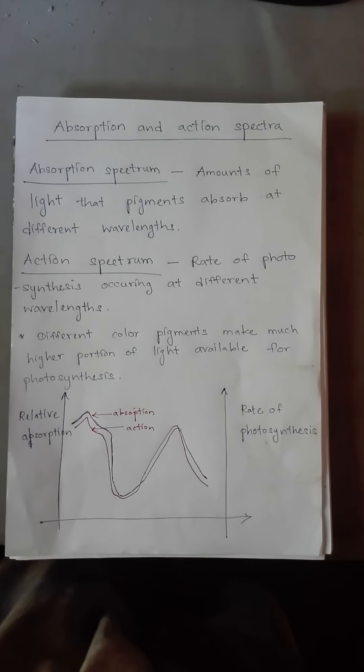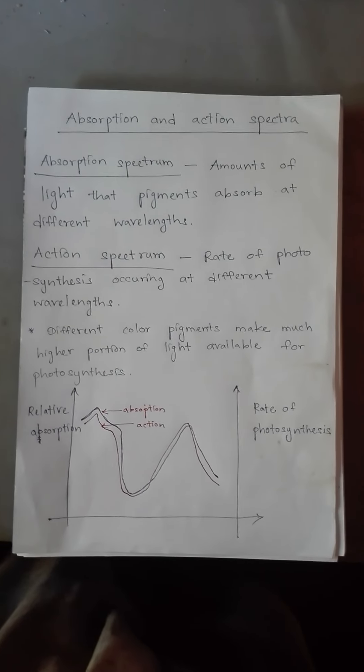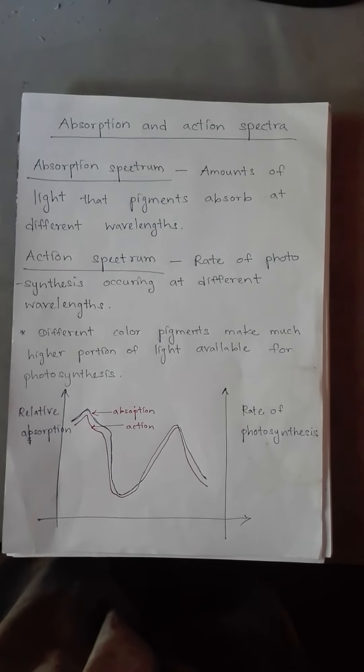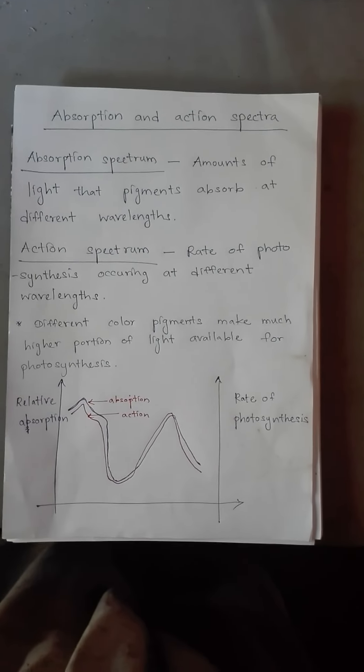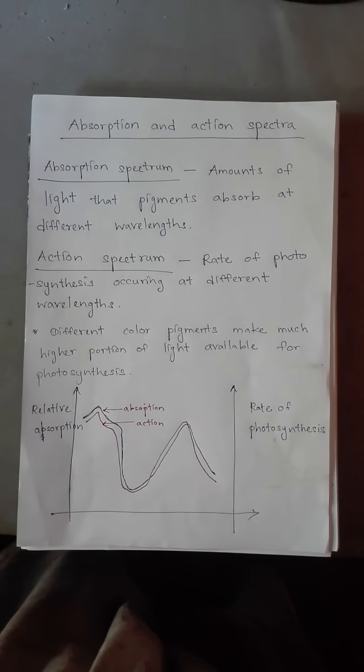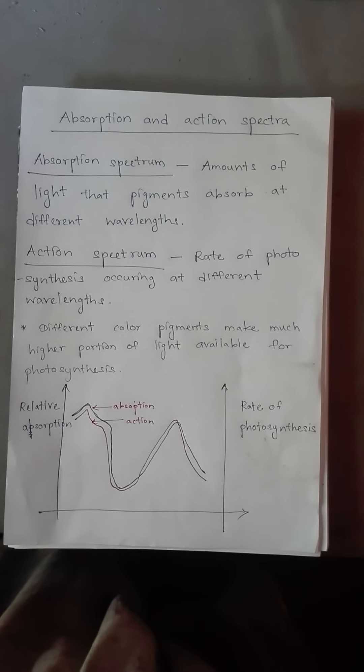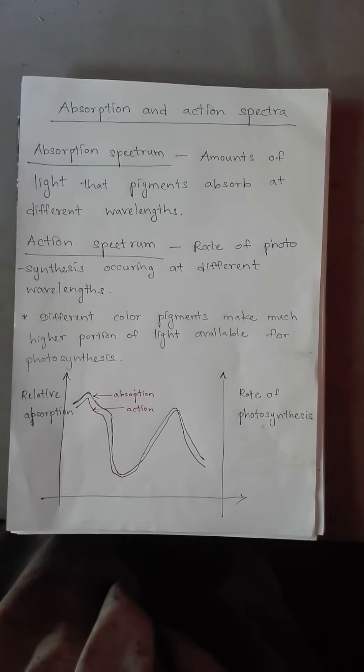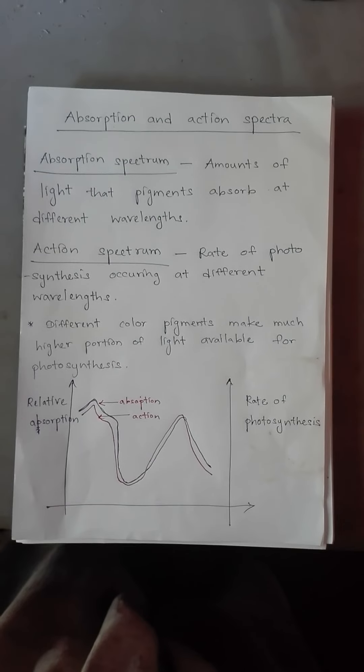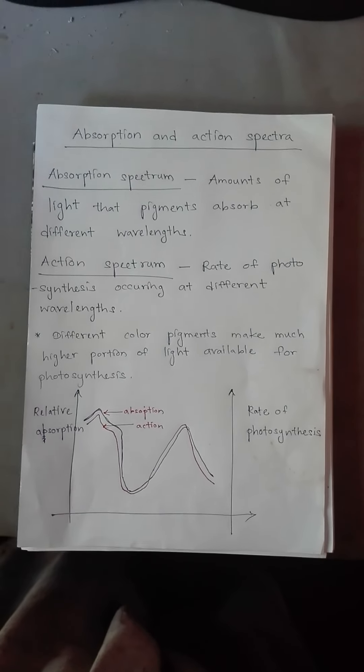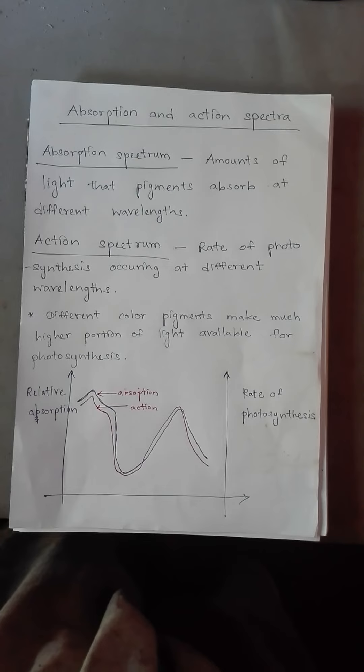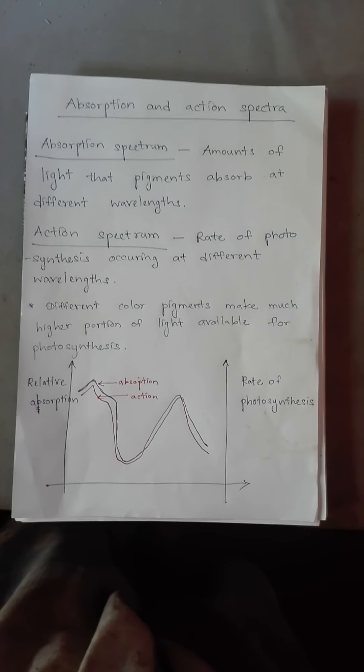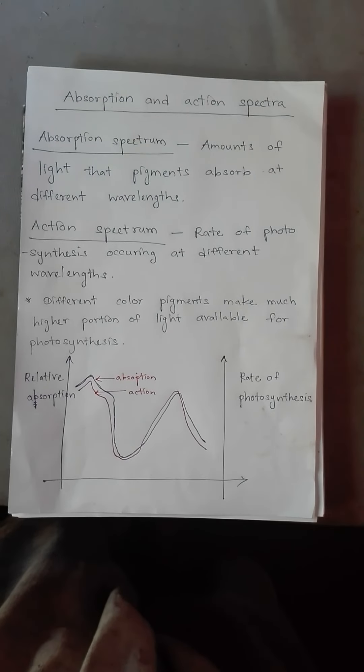The action spectrum indicates the rate of photosynthesis occurring at different wavelengths. Different color pigments make it easy because they make the light available for photosynthesis at different wavelengths.